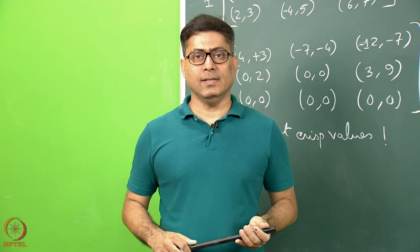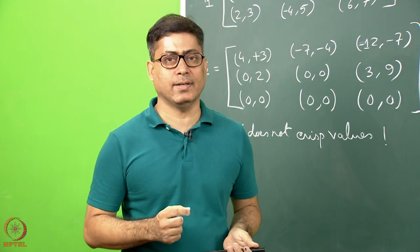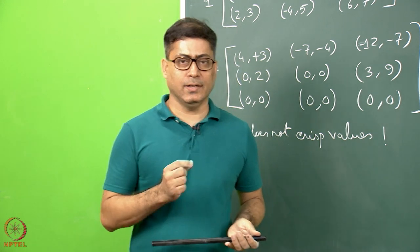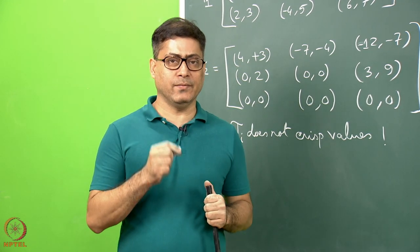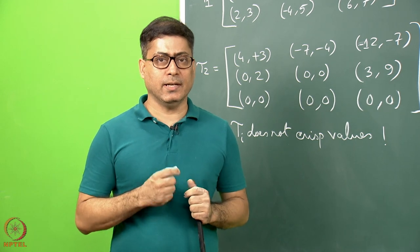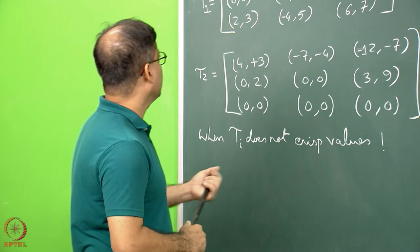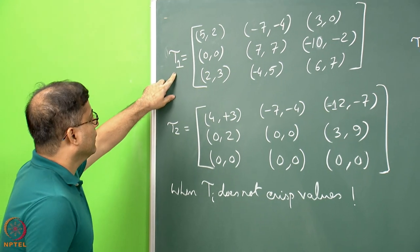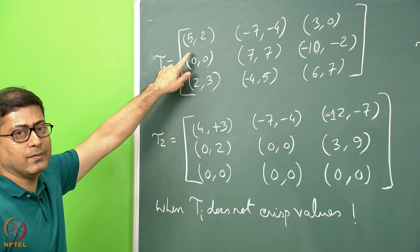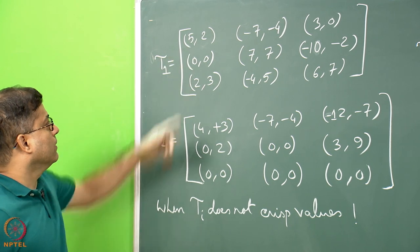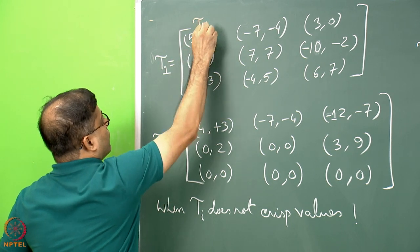We have seen stress tensors where each element has a definite value. What if we do not know the specific magnitude of stress, but only a range? In that case, each element of the tau matrix can be stated by two numbers — a maximum and a minimum. For example, tau11 may vary between 5 and 2; we do not know the exact value.